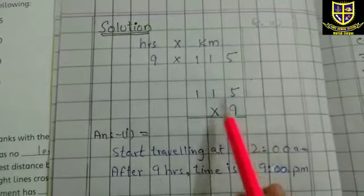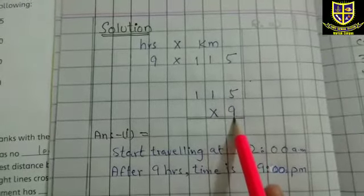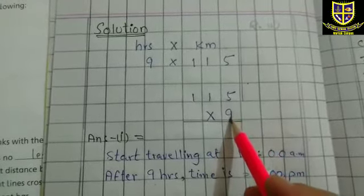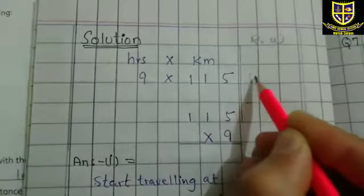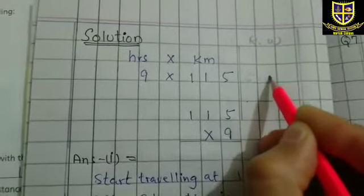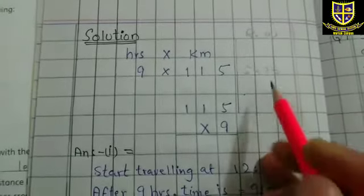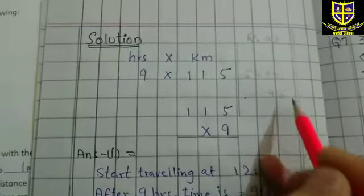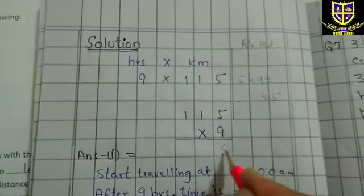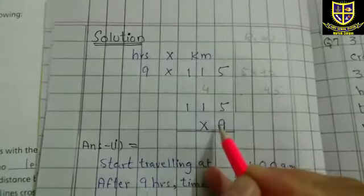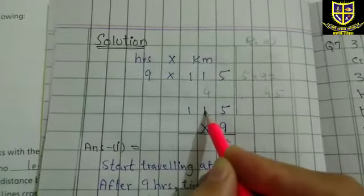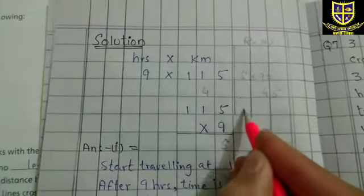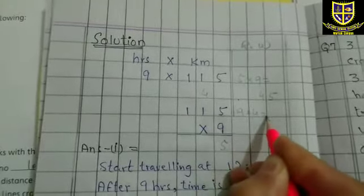Total کتنا فاصلہ بنے گا — 115 کو اوپر لکھو اور multiply by nine۔ آپ نے nine کا table پڑھنا ہے، یا five کا table nine تک۔ Five multiply by nine — five nine's are forty five۔ پانچ نیچے لکھیں گے اور four اگلے column میں جائے گا۔ Nine ones are nine — nine میں four plus کریں۔